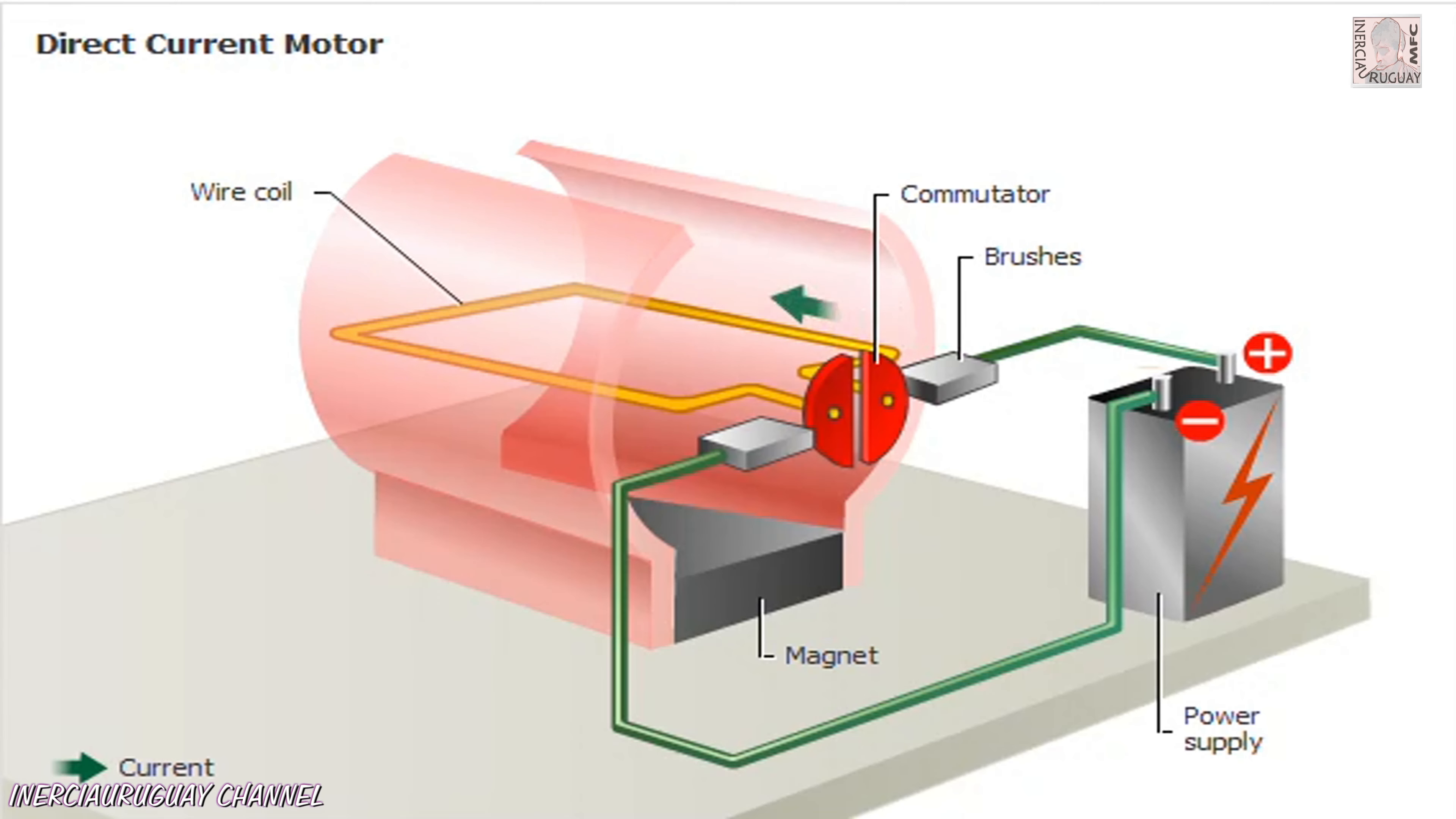The electric current flows from the source to the motor and back to the source in one direction. The current carrying wires in the coil experience forces in the presence of the magnetic field.